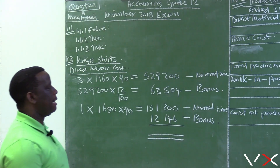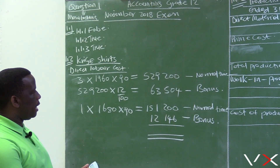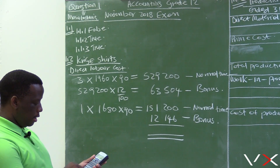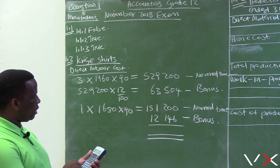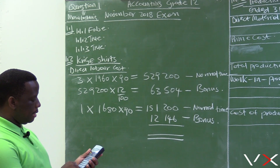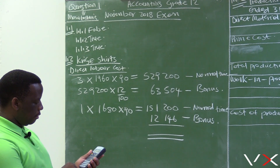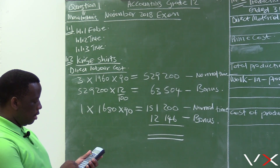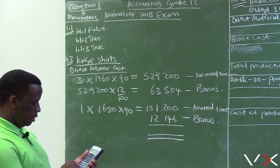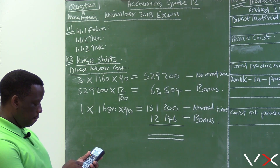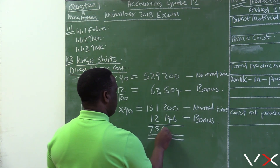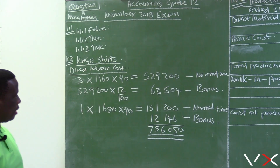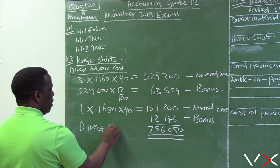We now calculate the total direct labor cost. The three workers' normal time is 529,200, plus their bonus of 63,504, plus the one worker's normal time of 151,200, plus his reduced bonus of 12,146, equals 756,050. The total direct labor cost is 756,050.